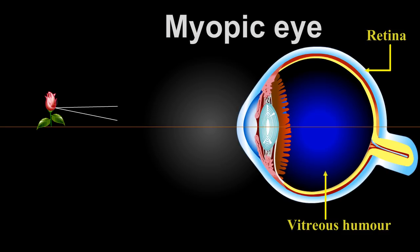Whereas in the case of a myopic eye, the light rays are focused in front of the retina.